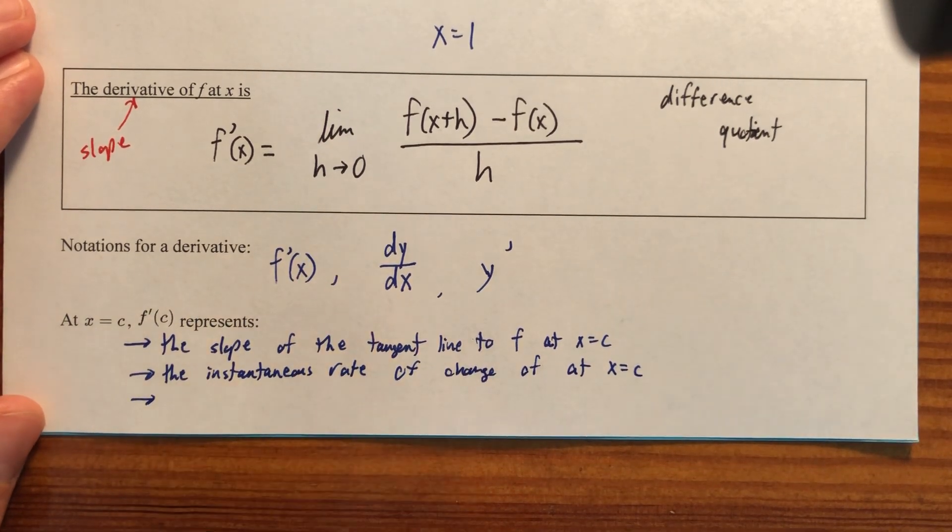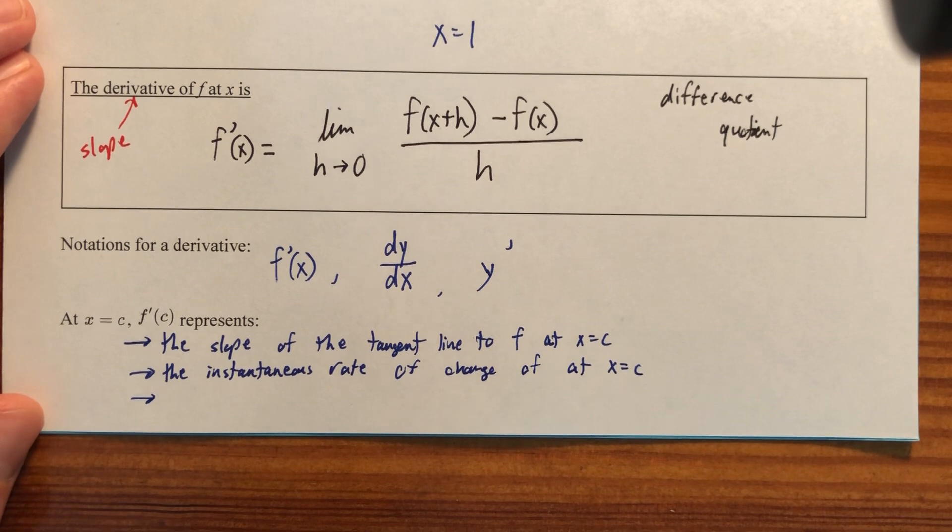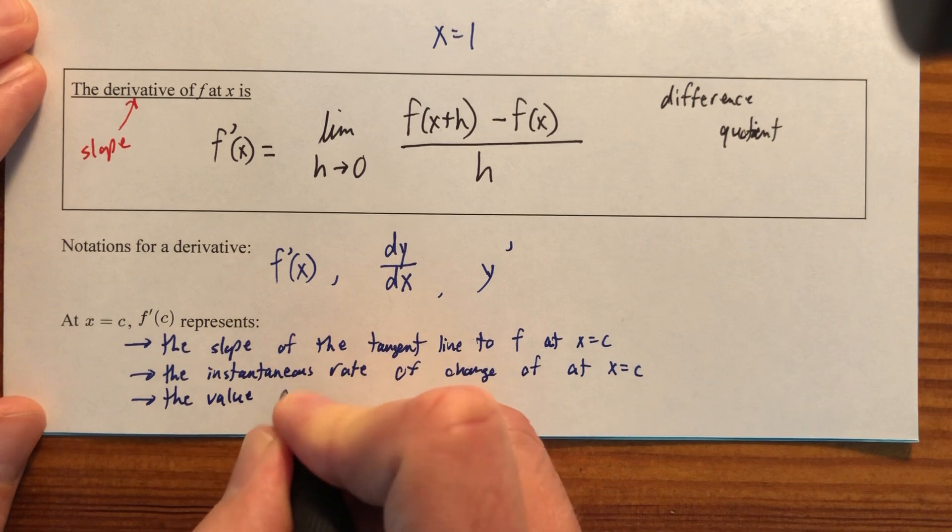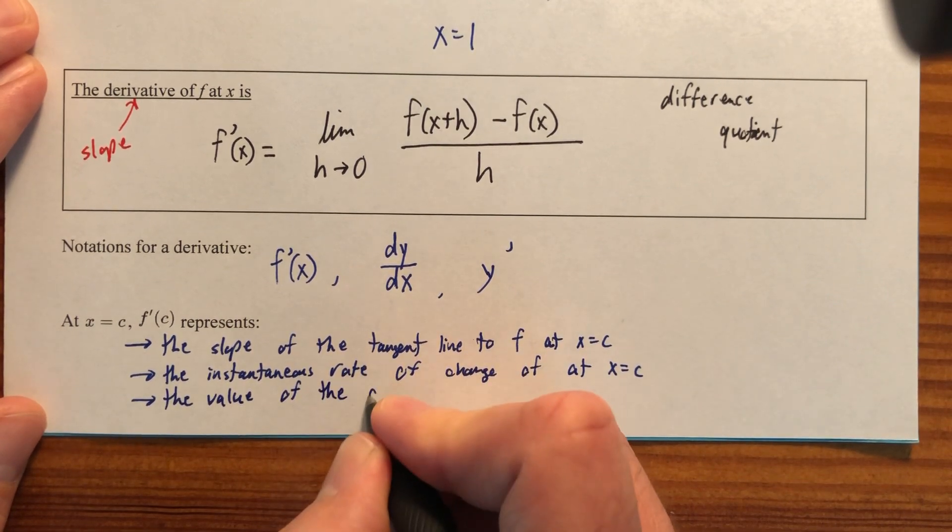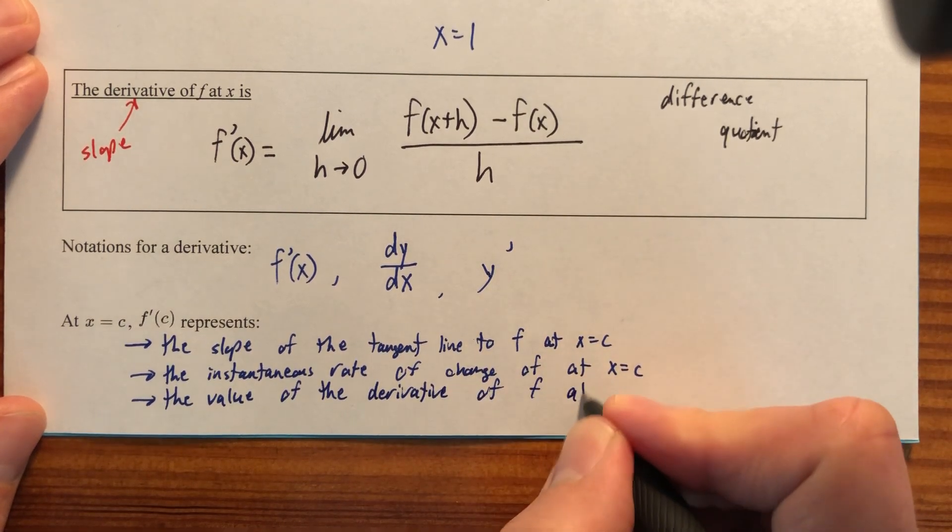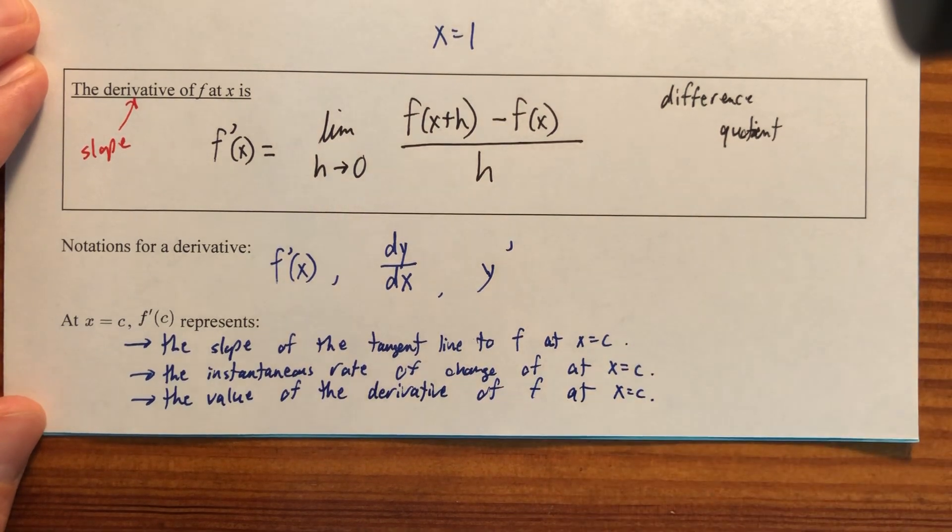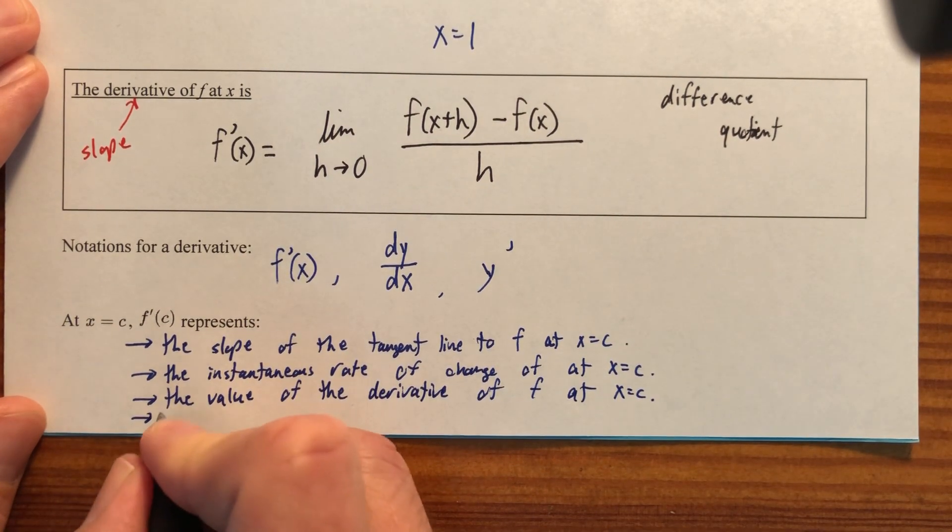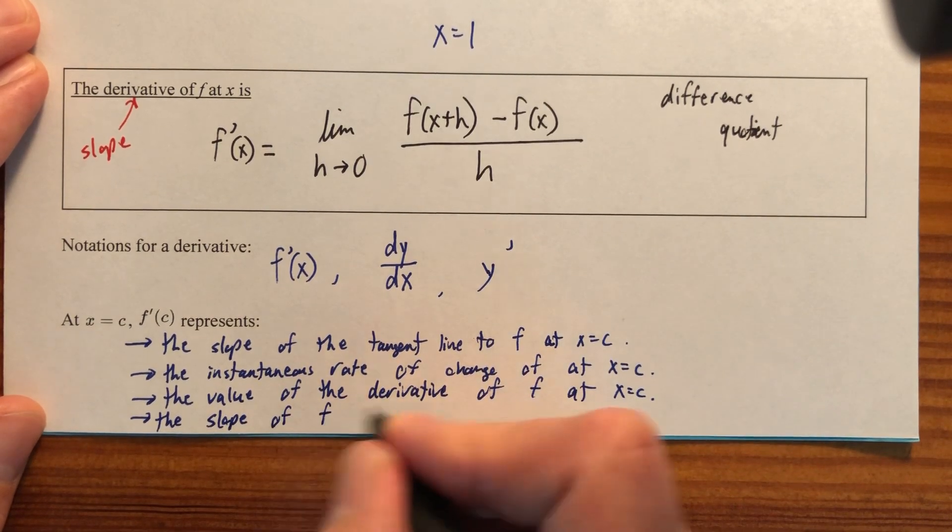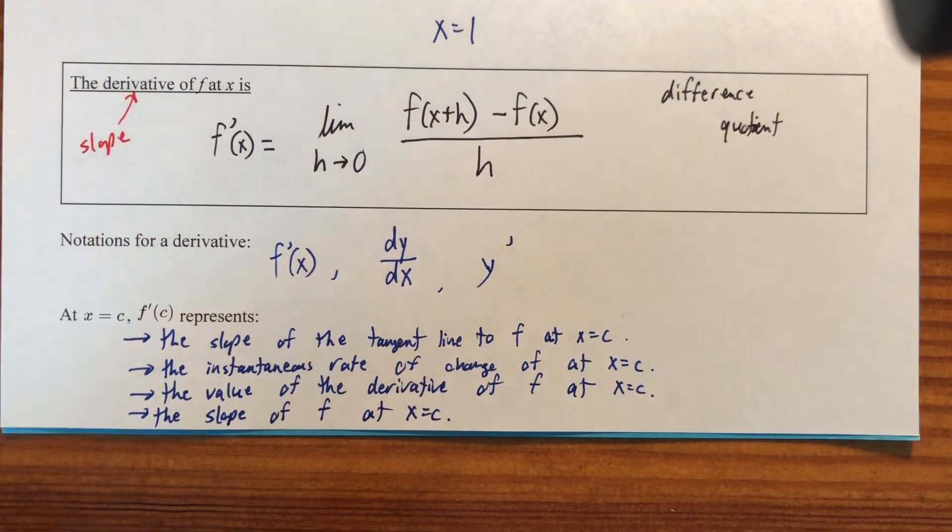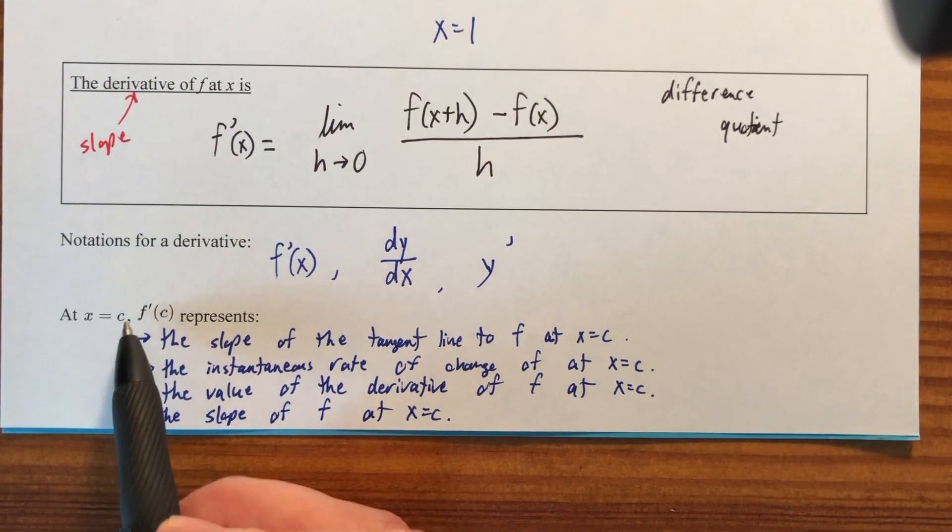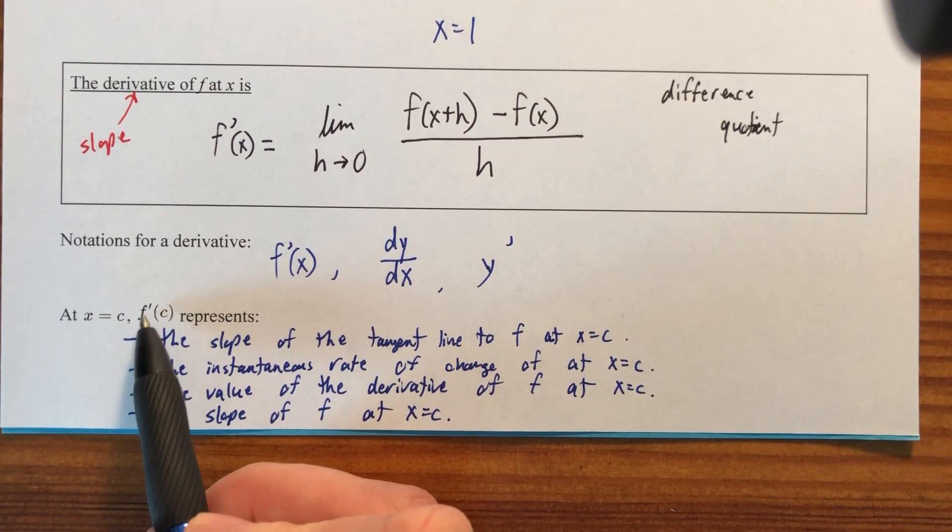It could represent all these things. It could just be worded differently. It is the value of the derivative of f at x equals c. And it could be the slope of f at x equals c.